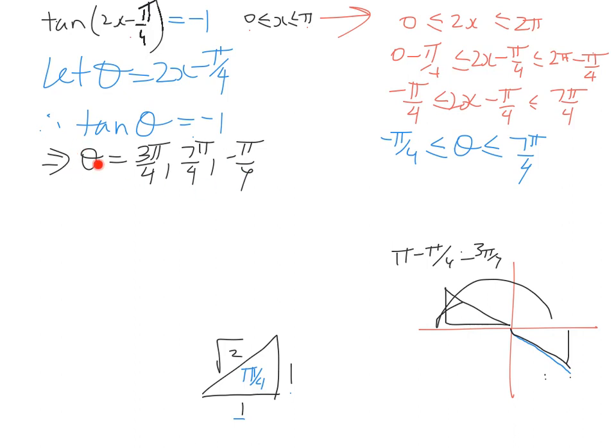Now we've got this set of θ, but we don't, unfortunately, want to solve for θ, we want to solve for x. So we substitute this back in place of θ. So now we're going to have 2x minus π/4 equals 3π/4, 7π/4, and -π/4.